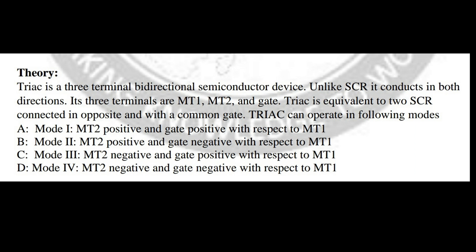The TRIAC is a three-terminal bi-directional semiconductor device. Unlike the SCR, it conducts in both directions. Its three terminals are MT1, MT2, and gate. The TRIAC is equivalent to two SCRs connected in opposite directions with a common gate. The TRIAC can operate in the following modes: Mode 1 - MT2 positive with respect to MT1; Mode 2 - MT2 positive and gate negative with respect to MT1; Mode 3 - MT2 negative, gate positive with respect to MT1; Mode 4 - MT2 negative and gate negative with respect to MT1.